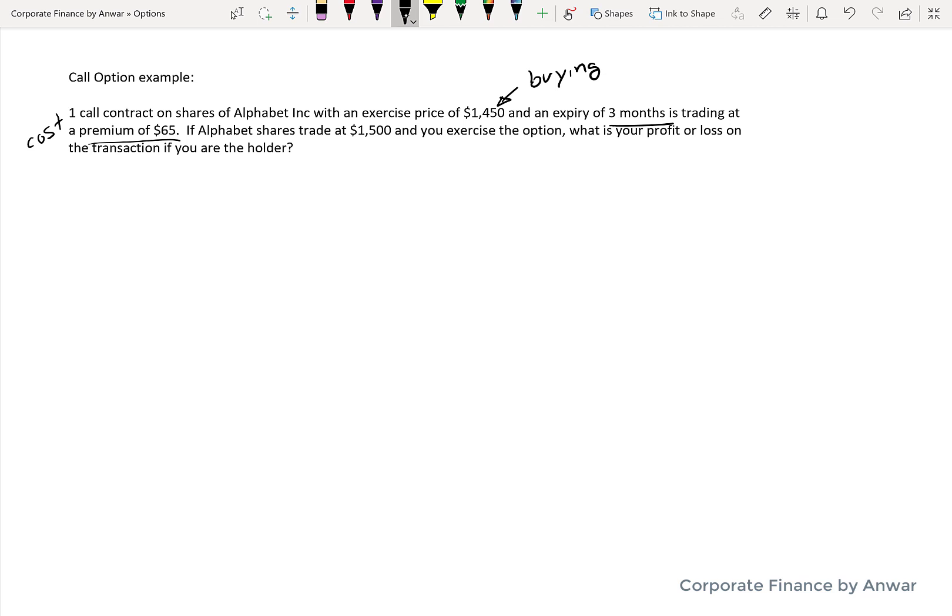Let's look at the cost of the transaction and a couple of other things. First of all, the premium is $65, so therefore your cost is going to be 100 shares for each option contract times the premium of $65.